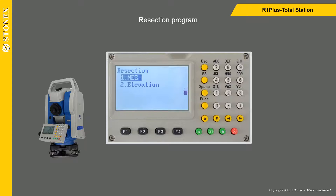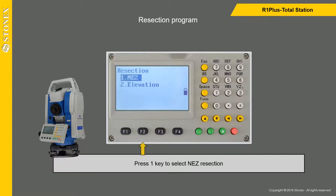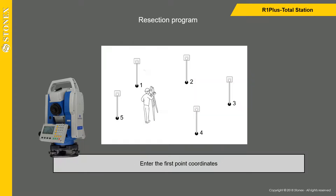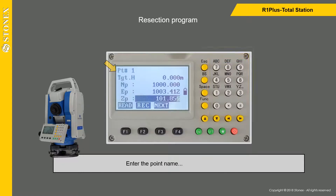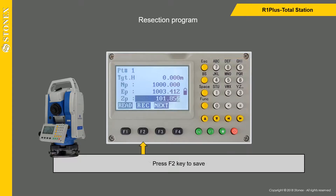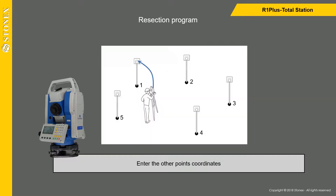Press the 1 key to select easy resection. Enter the first point coordinates: enter the point name and its coordinates, then press the F2 key to save. Continue by entering the other points' coordinates.